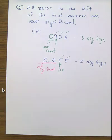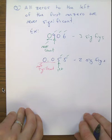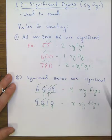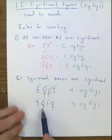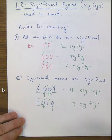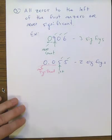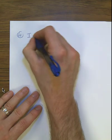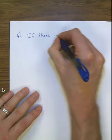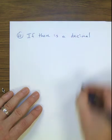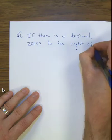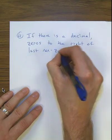To review: anything not a zero is significant; squished zeros count; zeros hanging off the end are not significant; and zeros to the left of the first non-zero never count. Rule four provides an exception: if there is a decimal, zeros to the right of the last non-zero are significant.